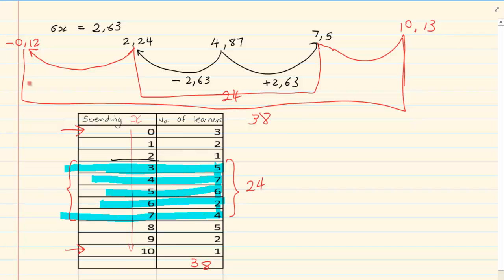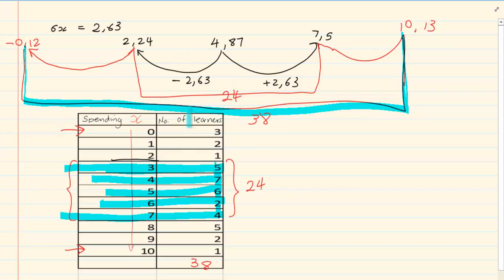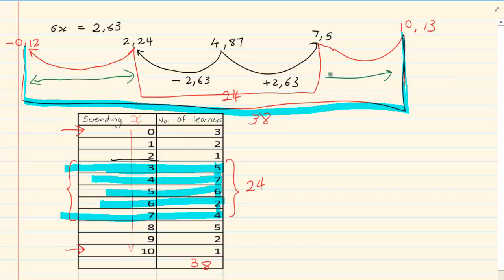The entire data lies within the second standard deviation, which is correct, because the 24 is still under that bracket. If they ask how many lie only within the second standard deviation — meaning between the first and second — that would be 38 minus 24, which gives you 14. So the number of people that lie only within the second standard deviation is 14.